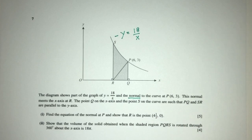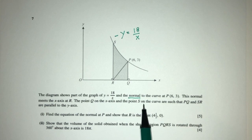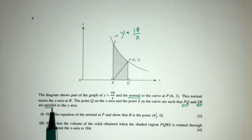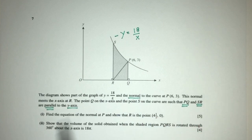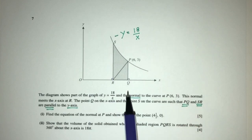The point Q is on the x-axis, and the point S on the curve are such that PQ and SR are in the same direction to the y-axis. So PQ is this one, and SR this one, they are vertical lines.